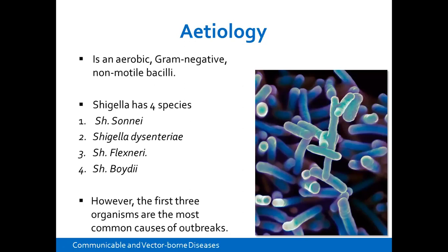There are exceptions to every rule. The Shigella species that normally cause Bacillary dysentery can be looked at in four types: Shigella sonnei, Shigella dysenteriae, Shigella flexneri, and Shigella boydii. However, the first three — sonnei, dysenteriae, and flexneri — are the most common causes of outbreaks of acute bloody diarrhea, which is Bacillary dysentery.